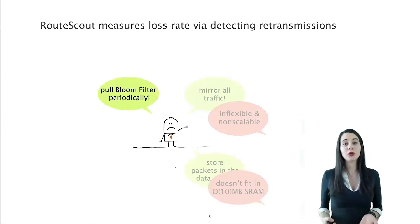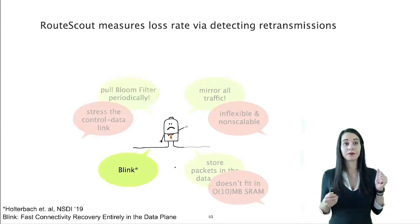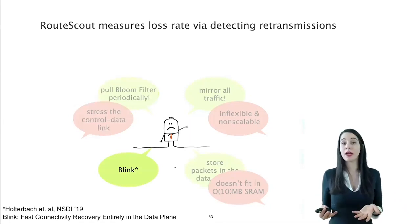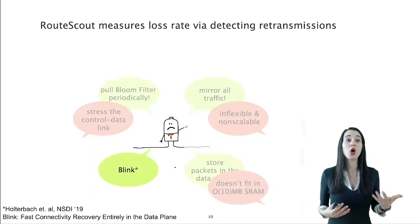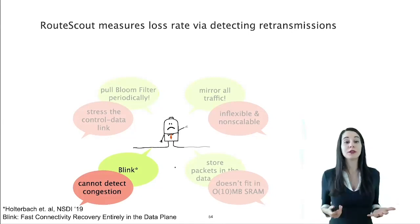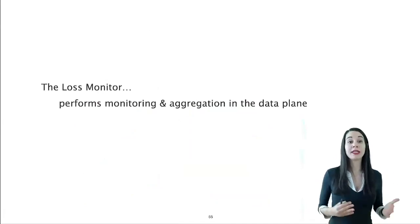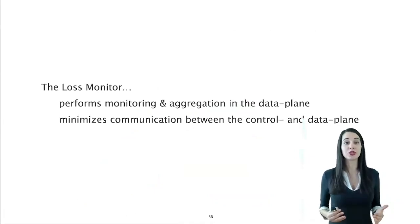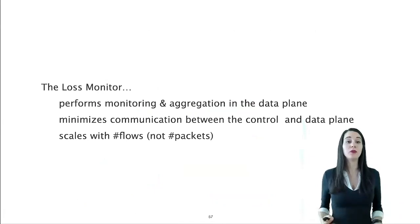One would think that an alternative solution would be to use a bloom filter, store all the packets there, and then pull the data plane structure from the control plane periodically. This would also not work because it will stress the control-to-data plane link. A final alternative approach that comes to mind is Blink. As a reminder, Blink is a data plane system that detects remote failures via detecting retransmissions. One could assume that Blink can also sense retransmissions caused by congestion. Unfortunately, this is not true, as Blink can only detect retransmissions after the second one.